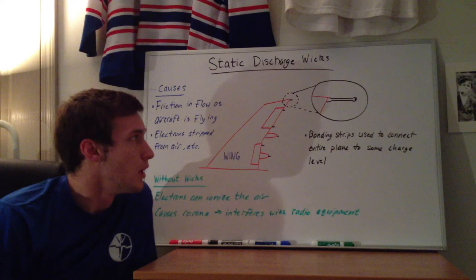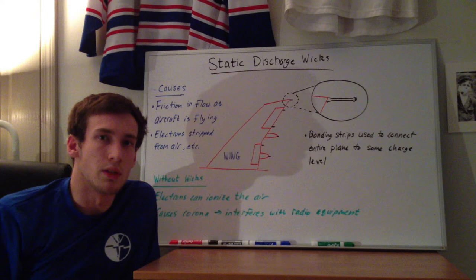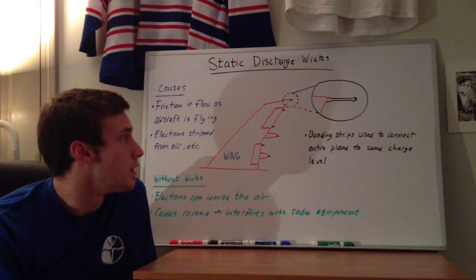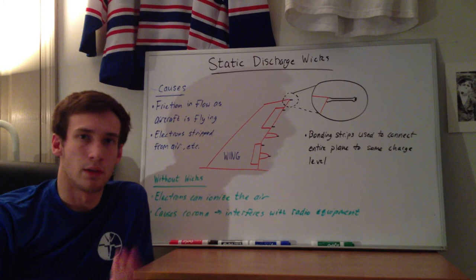The static discharge wicks are actually very resistive — not to keep all the charge on the plane, but to control the rate of discharge from the plane. Because you don't want arcing from the plane when it's discharging. That's why you'll see these kind of unusual wick things on the edges of the aircraft.